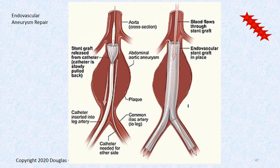Surgical techniques have gotten pretty good. Let's take a look at the EVAR procedure — they stick a catheter in. You don't have to open the patient up; this is all done from the inside. They open the catheter up and pop a graft out — it snaps outward and wedges itself in place. They don't have to cut the old tissue off but it stops the blood flow, and the old tissue just atrophies away. They've basically given you a new vessel from the inside out.